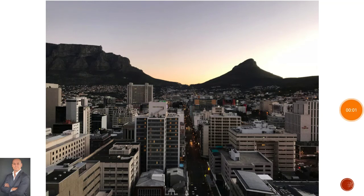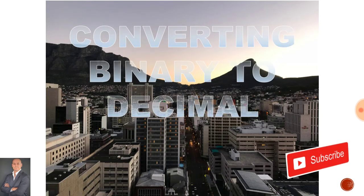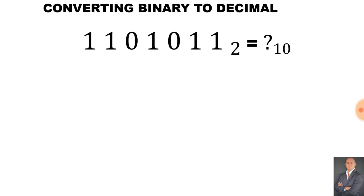Welcome back to N3 Electrode Technology and in this lesson we'll be converting binary into decimal. The binary number that we are dealing with is 1101011 and that is represented by the small number 2 to indicate that it is a binary number.